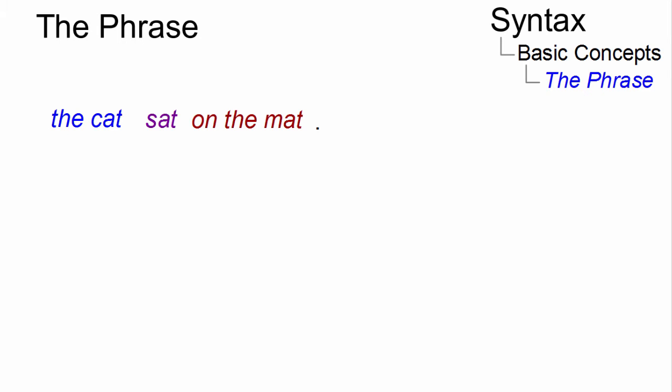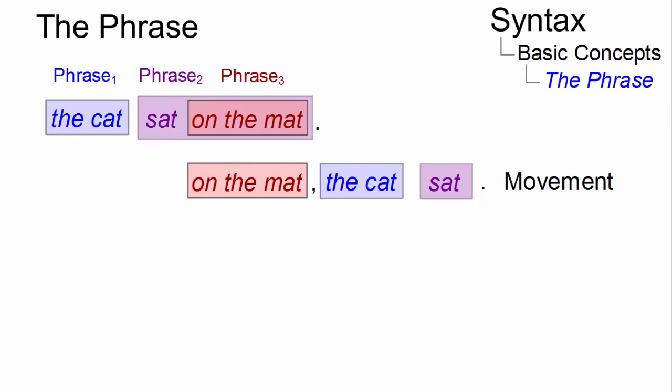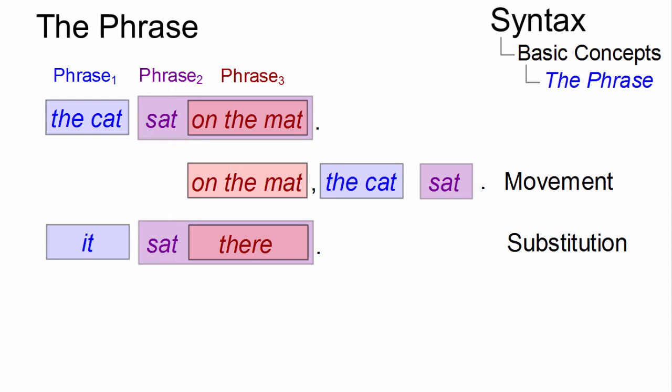In 'the cat sat on the mat,' we have three phrases. So let's move them around: On the mat, the cat sat. Or let's replace phrases by some other elements, as in, it sat there.